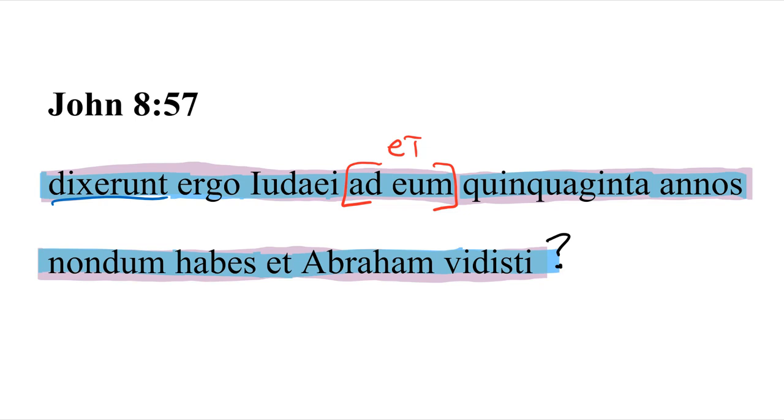But the main thing to talk about here is this construction: Quinquaginta annos nondum habes. Habeo plus an accusative phrase indicating a certain number of years is the typical way of indicating age.